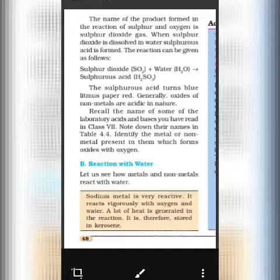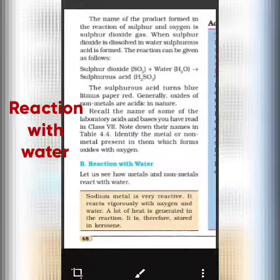Now the table you have filled, here the same thing is explained. The name of the product formed in the reaction of sulfur and oxygen is sulfur dioxide gas. This sulfur dioxide gas is acidic in nature. When this sulfur dioxide gas is dissolved in water, it forms sulfurous acid as I told you in the previous slide.